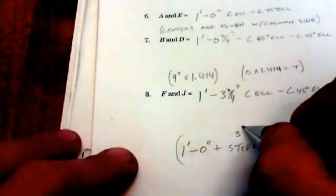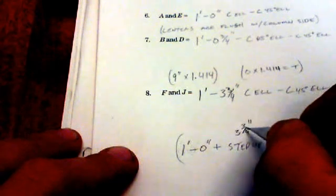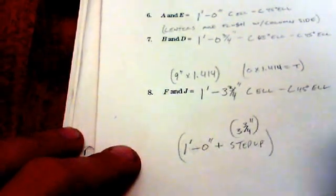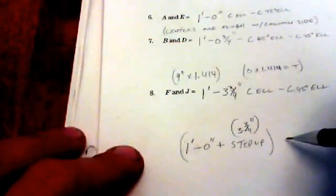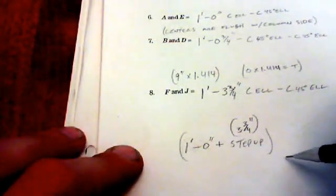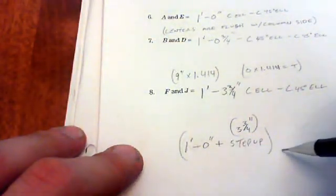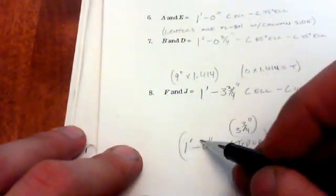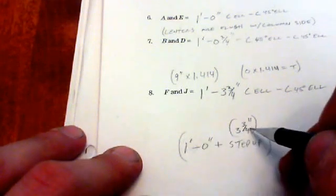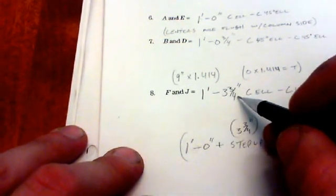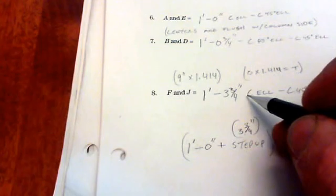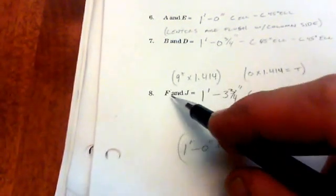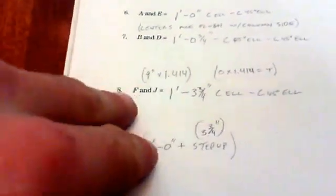I'm going to punch that in a calculator real quick. 9 times 0.414. That's 3 and 3 quarters of an inch. That's our step up. For F and J, you have one foot plus the step up. There's your final dimension there.